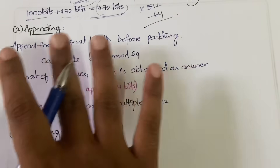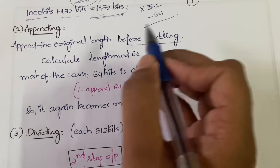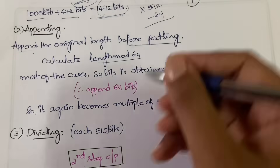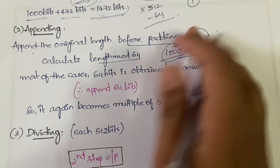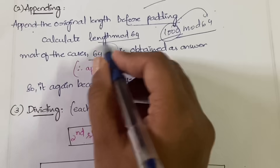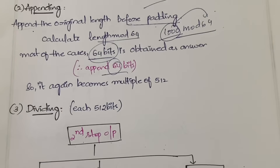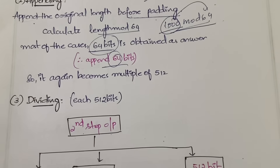The second step is appending. You need to append the original length before padding. You compute: original length mod 64. In our case that is 1000 mod 64. In most cases you will get 64 bits. You then append those 64 bits, which brings the total back to an exact multiple of 512, because we had subtracted 64 in the previous step and now we add it back.